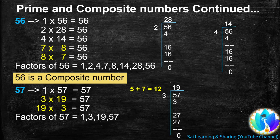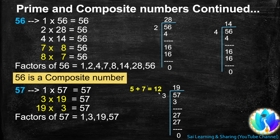Next, 57. 1 is a factor of every number, so 1 times 57 equals 57. 57 is not a multiple of 2 because the ones digit is not even. 57 is a multiple of 3 — using the divisibility rule, 5 plus 7 equals 12, and 12 is a multiple of 3. When we divide 57 by 3, we get quotient 19, so 19 is another factor of 57, and 3 times 19 equals 57.